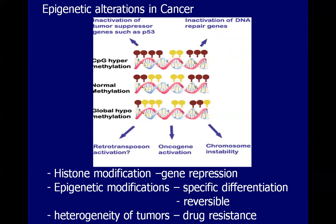With regards to epigenetic alterations in cancer, epigenetics refers to changes in gene expression. Take note that it is reversible and occurs in the absence of mutation. This is done through post-translational histone modification leading to DNA compaction, as well as methylation, which occurs at CpG nucleotides to regulate or turn off gene expression. A very important thing to remember in epigenetics is that these are reversible processes because they are mediated by enzymes.